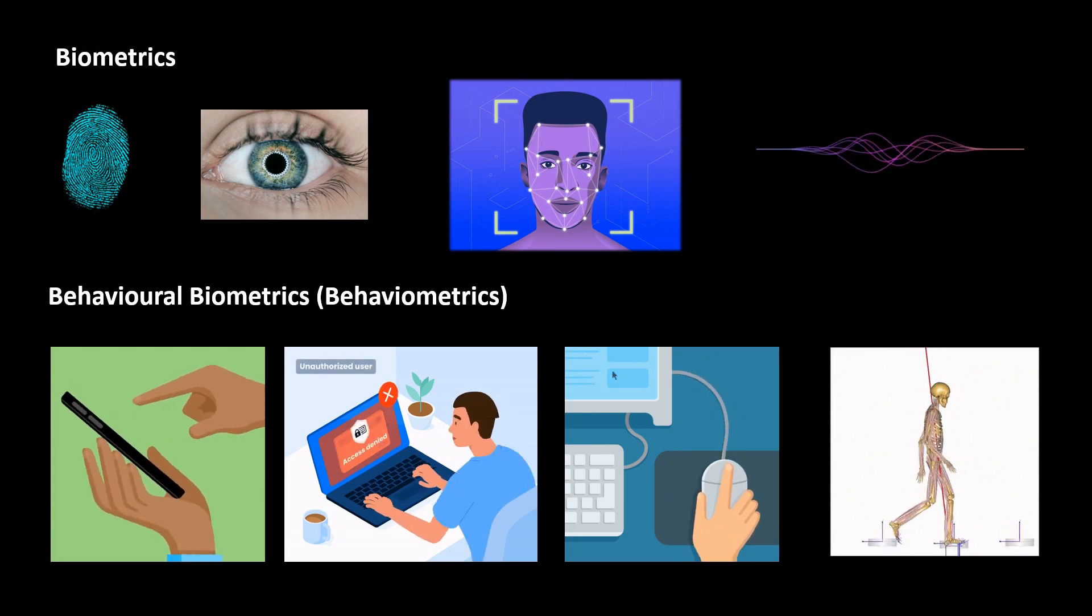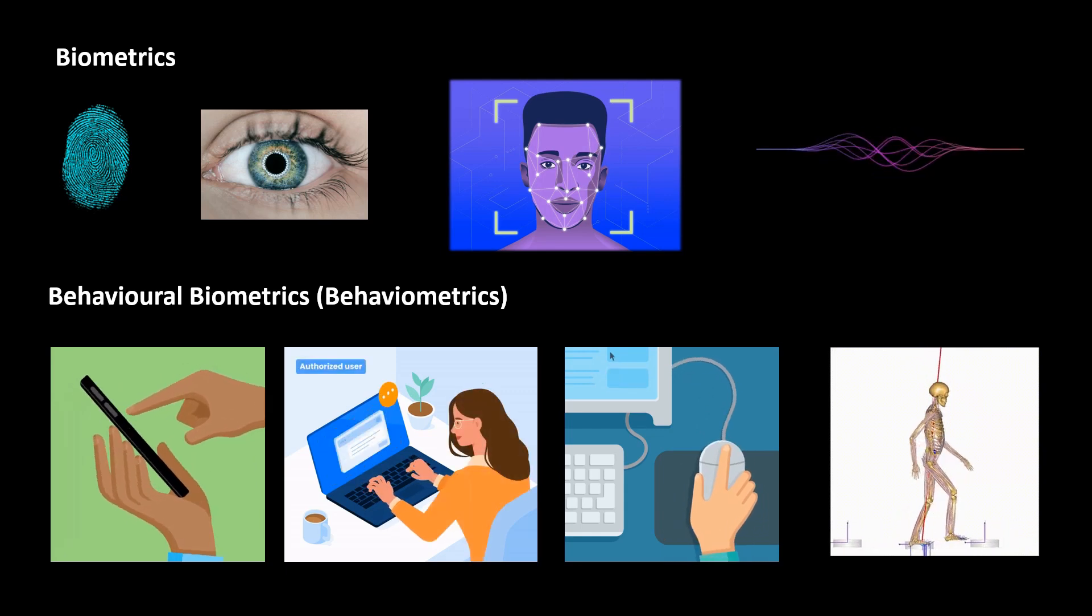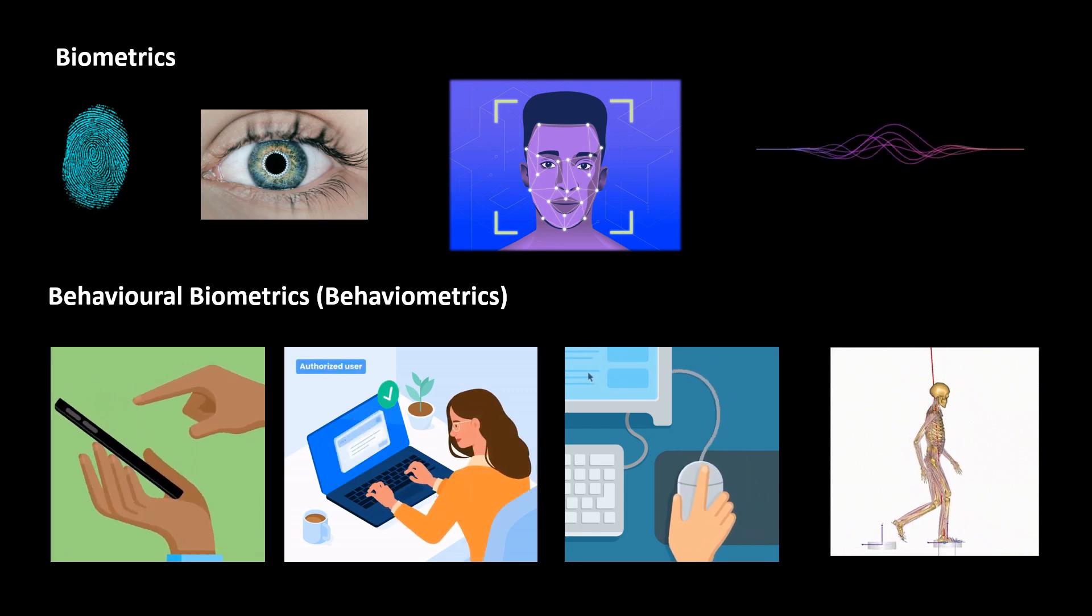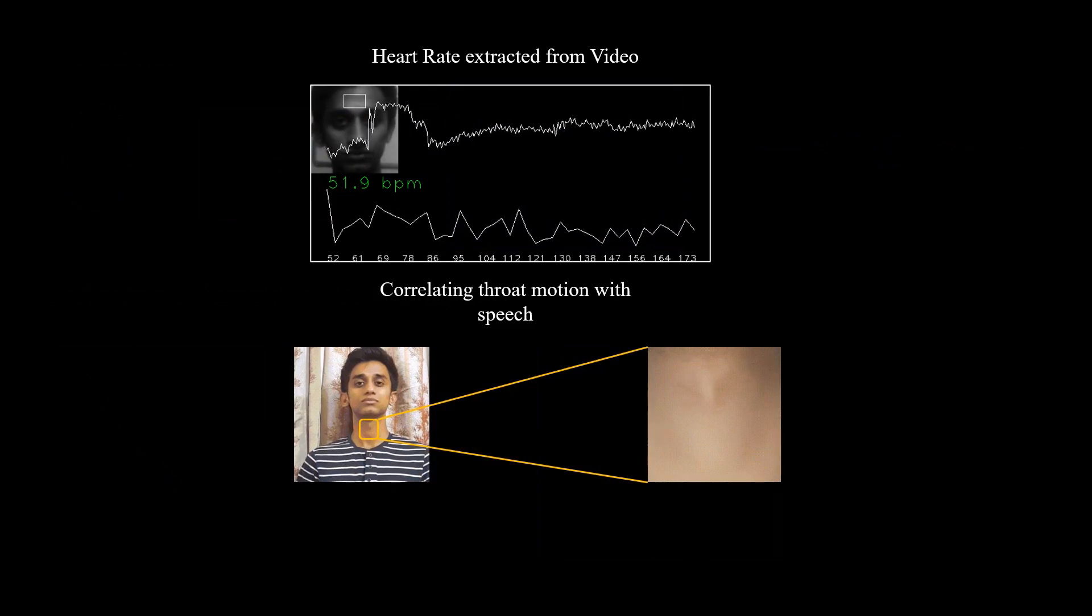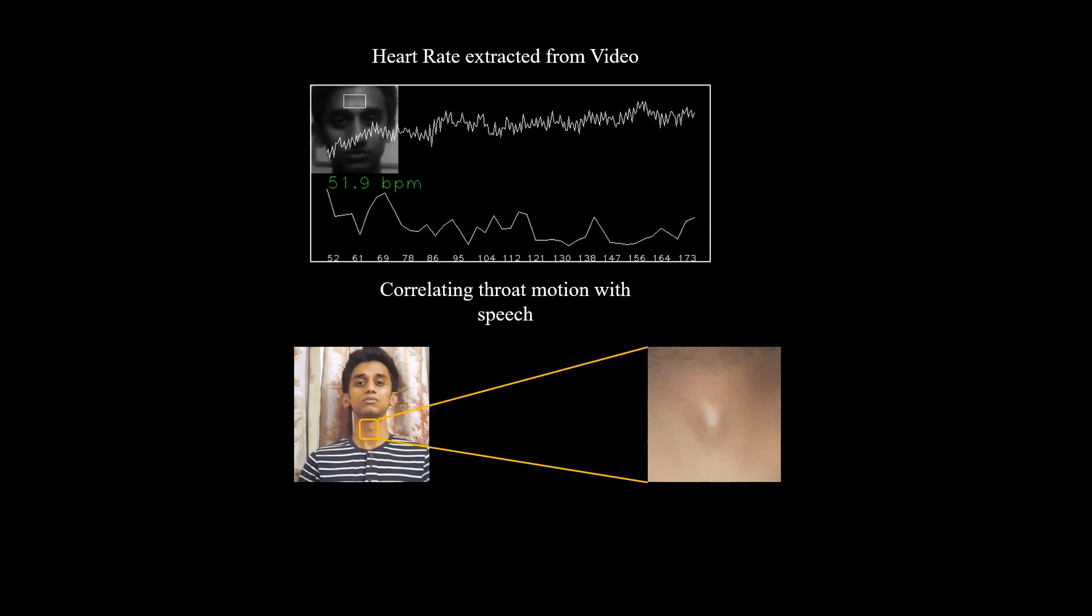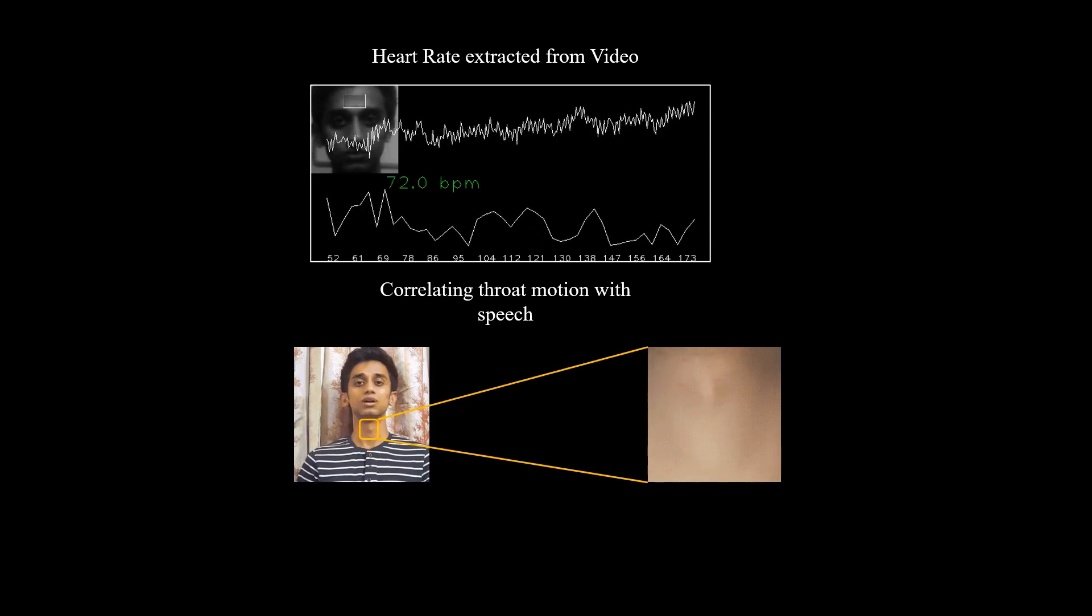There are also behavior metrics that analyze the patterns in touch, typing, mouse motion, etc. Here we propose two multi-model behavior metrics that leverage the physiological information which is not explicitly evident and needs signal amplification techniques to observe.